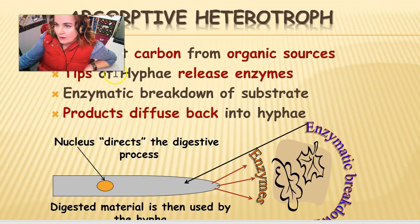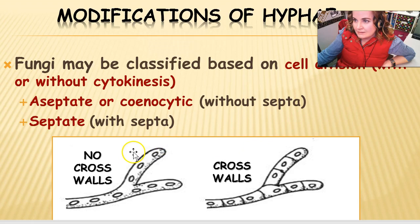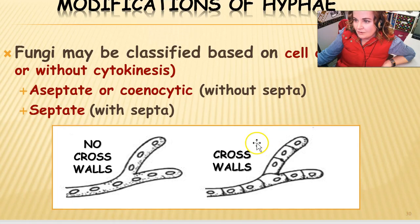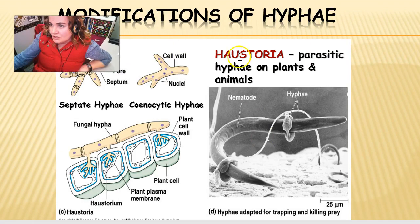As absorptive heterotrophs, fungi excrete enzymes out of the tip of the hyphae, which breaks down the material they're trying to digest, and then absorbs it back into the hyphae — that's how the fungus eats. Septa can divide up different areas if necessary; some fungi have them, some don't, and some have them in some places but not others.